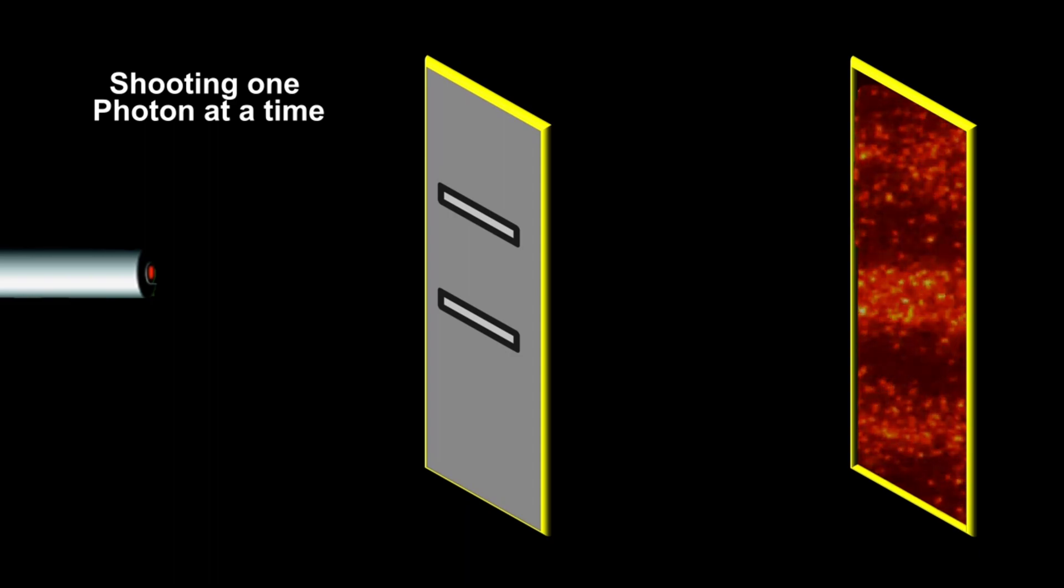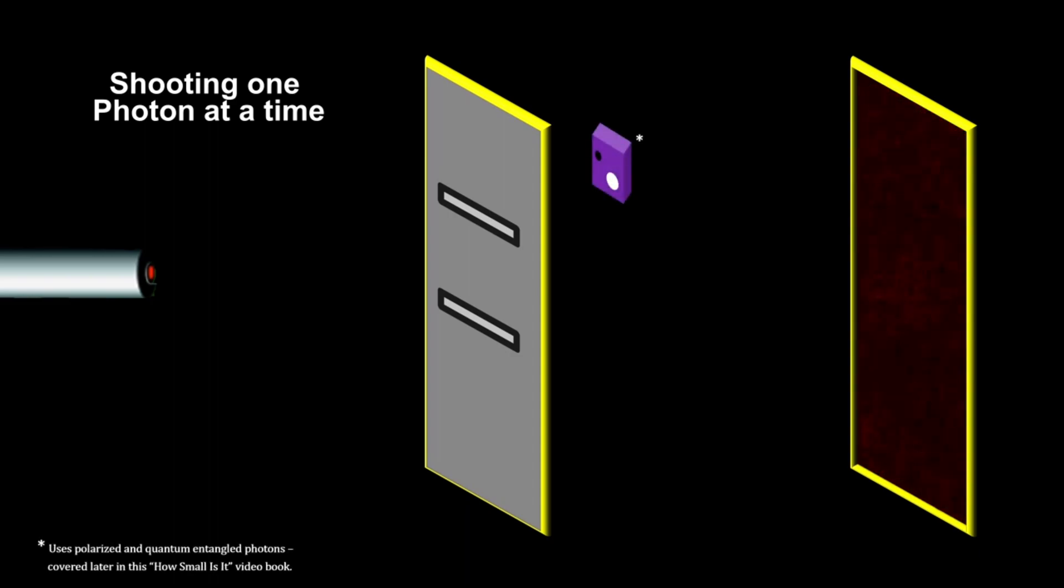So what would happen if we isolated a photon in a vacuum and tried to make it go as fast as possible? Could this single photon possibly travel faster than the speed of light?